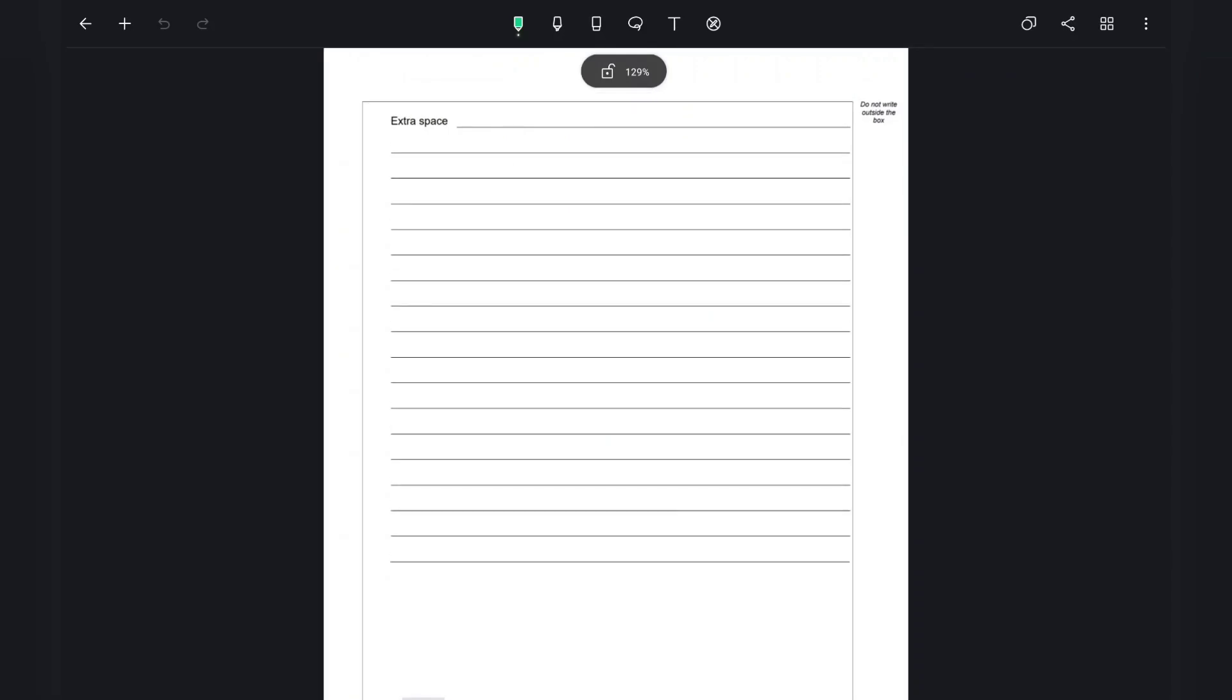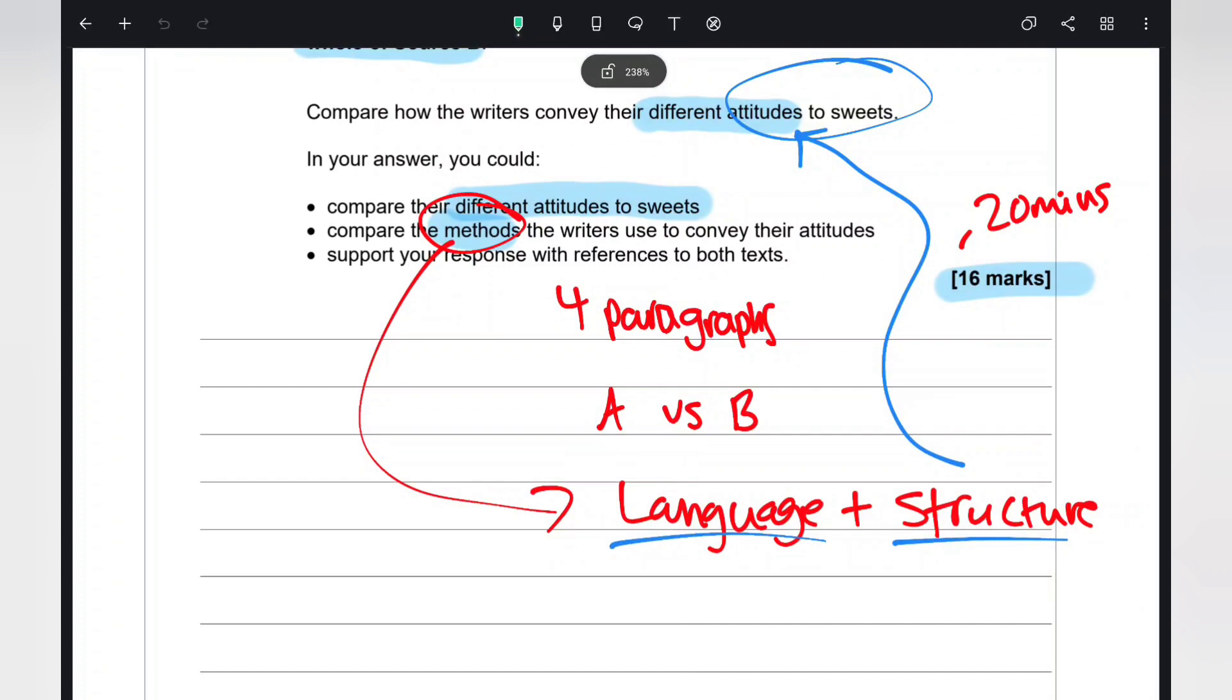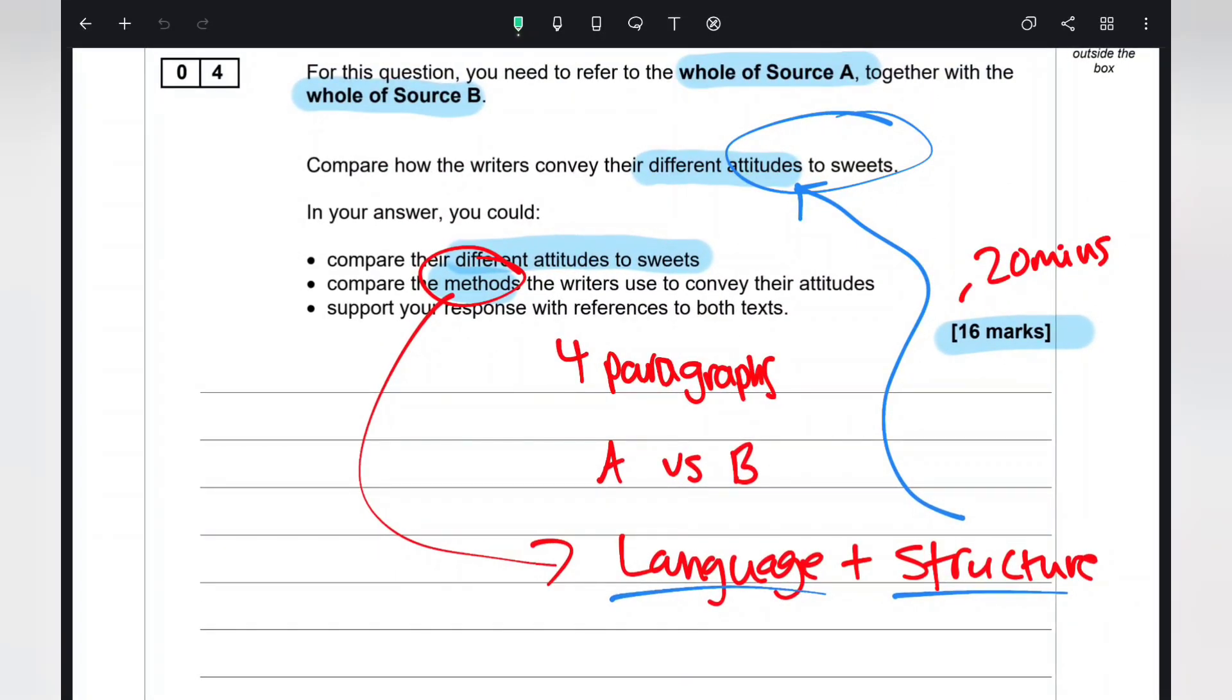Question 4 is the last question for Section A—very important, worth 16 marks. You should aim to write three to four paragraphs comparing the two sources. It will be on attitudes, for example. You're comparing viewpoints and supporting them with the writer's methods through language and structure. Spend about 20 minutes on this question. This is a significant question in deciding if you get your target grade, so don't rush it. Write the best possible answer.